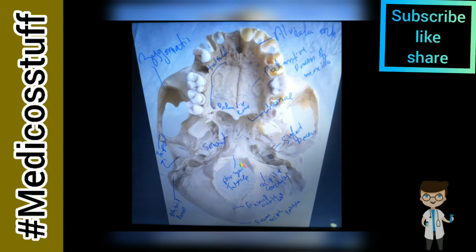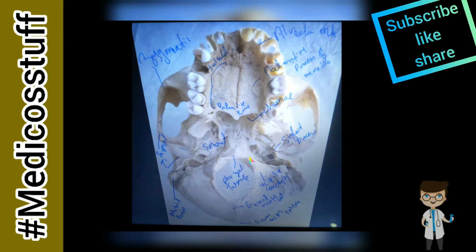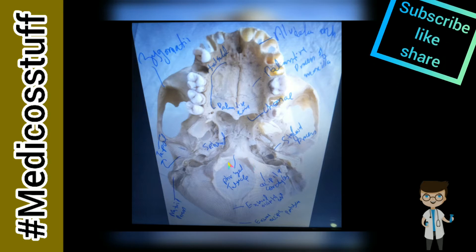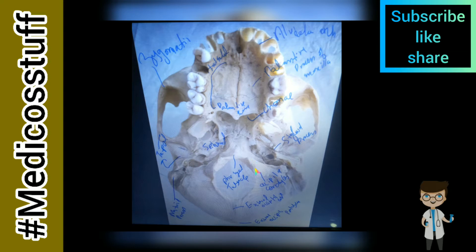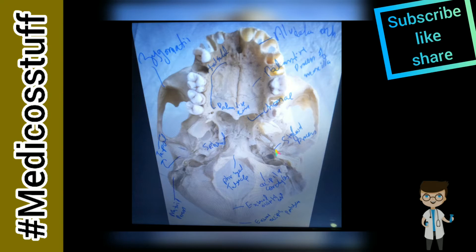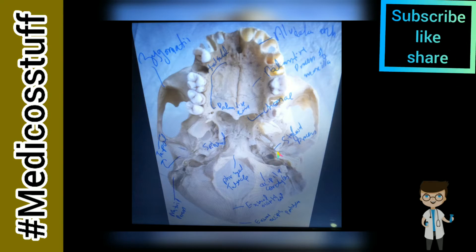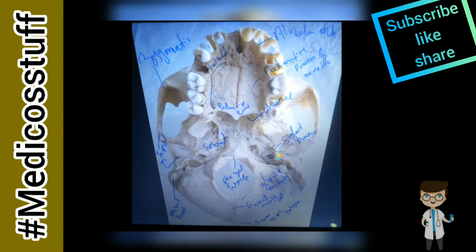This is the foramen magnum. In front of the foramen magnum there is a pharyngeal tubercle. On the sides of the pharyngeal tubercle you will see the occipital condyles — this part and this part are known as occipital condyles. You can also see a small process elevating upward known as the styloid process, which is important for OSCEs.